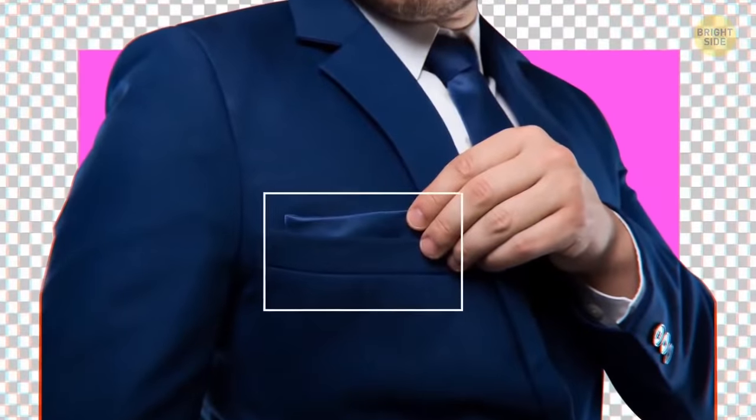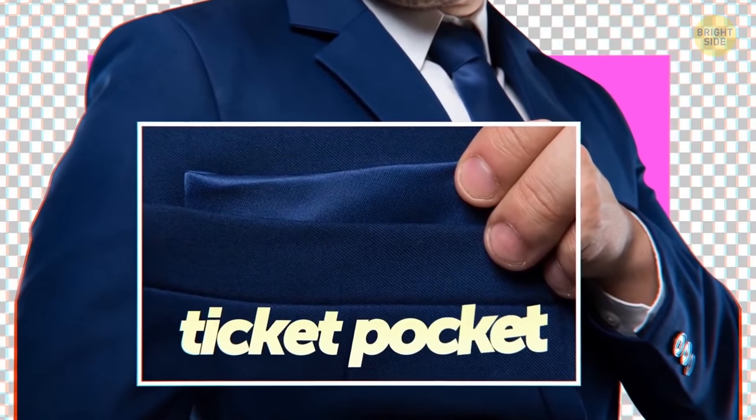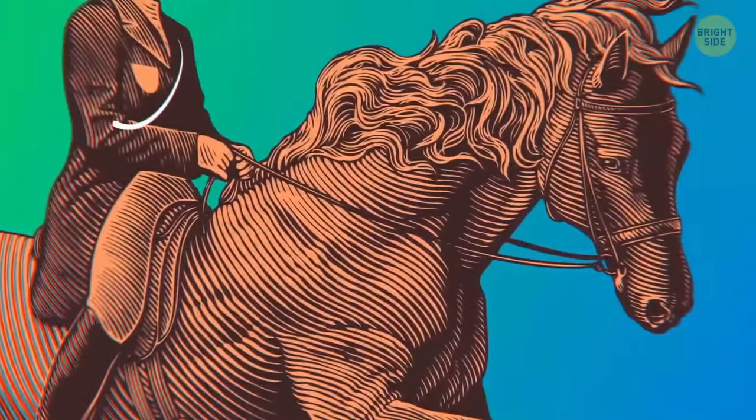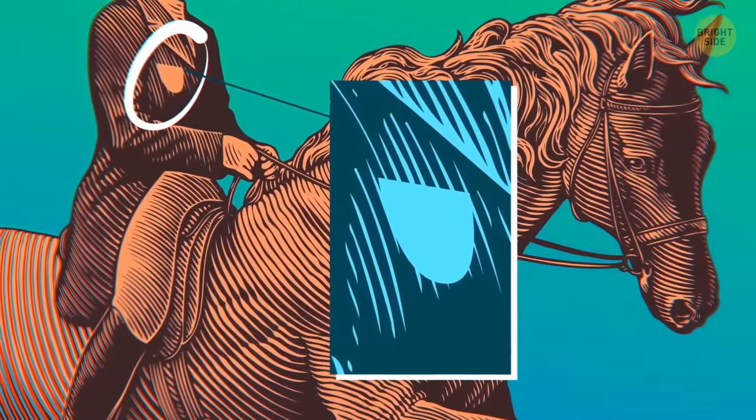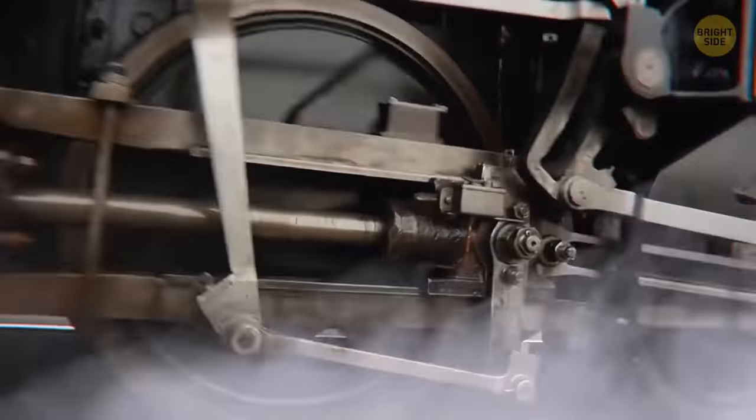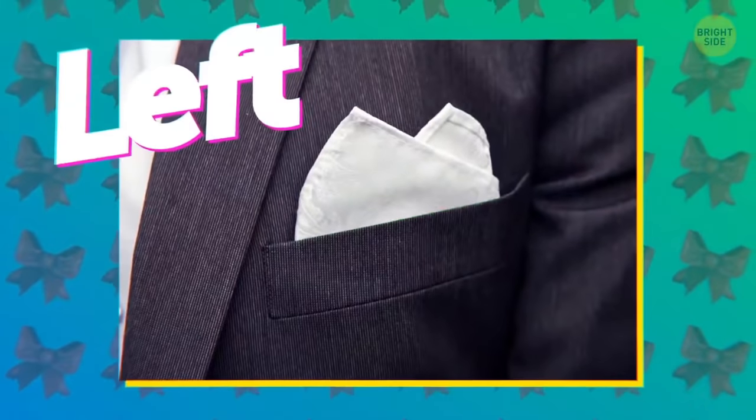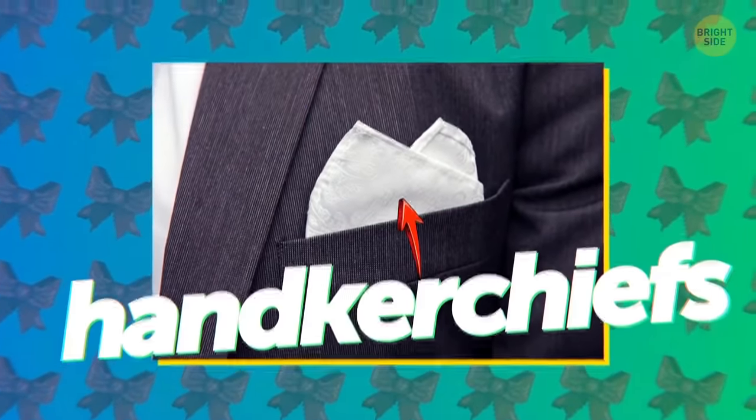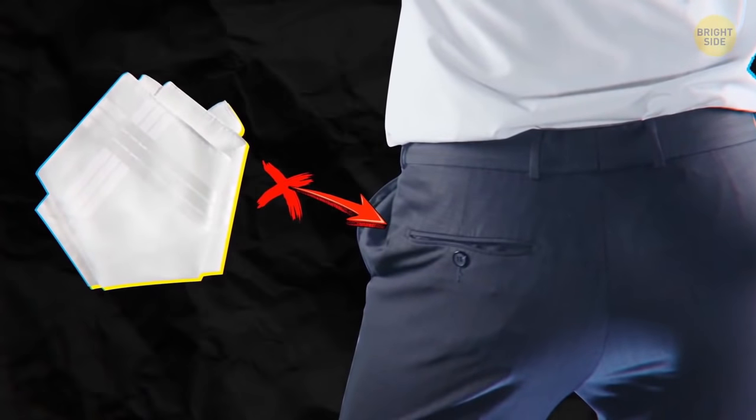That extra pocket on the right side of a suit jacket is called the ticket pocket. They used to store coins for people on horseback to pay tollbooths without opening their jackets. When train travel became more popular, they were perfect for tickets and passes. As for the left chest pocket, it's used to store handkerchiefs, keeping them away from the other cluttered and dirty pockets.